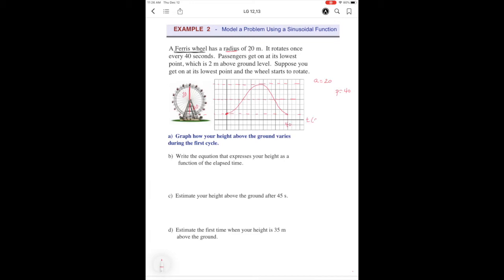All right, so that means this time in seconds, that's the 40 seconds, that's where you get back, so that's one period. We want to get the b though because we're going to be writing an equation, so it's going to be 2π over 40, or you can simplify it to π over 20.